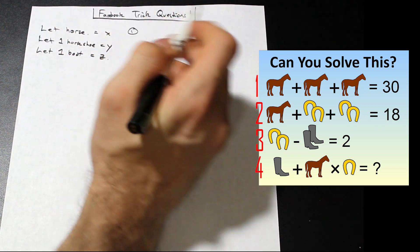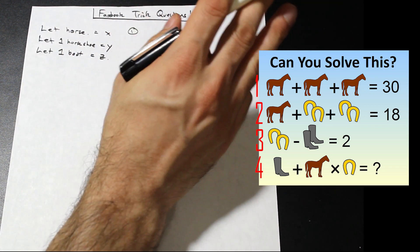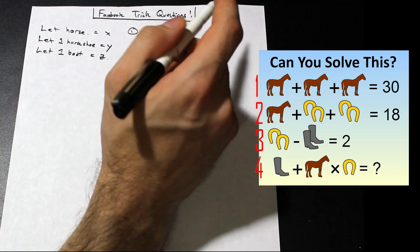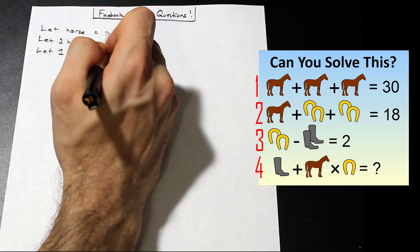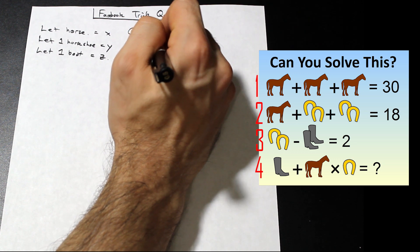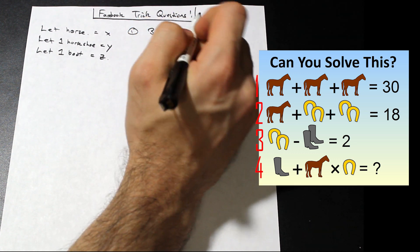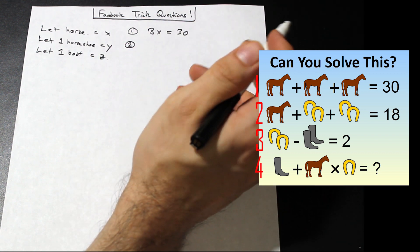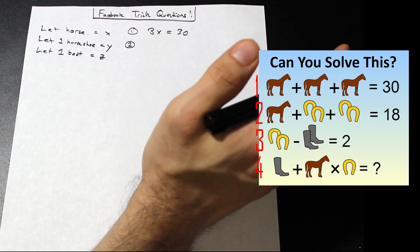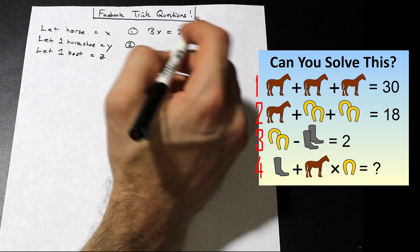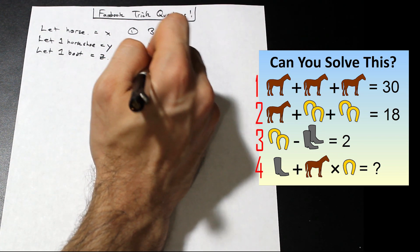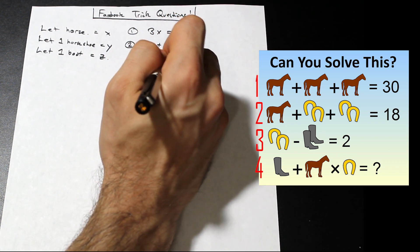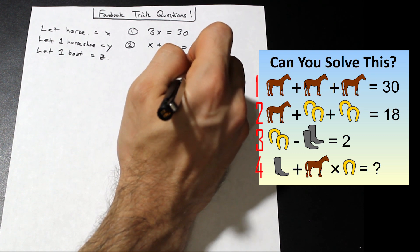Okay, so we've assigned variables to all of our little pictures. Let's go ahead and we'll start to write out equations. So we have three horses equals 30 in the first equation. We let one horse equal X, we have three horses, so that's going to be 3X equals 30. That's our first equation. For our second equation, we have one horse and count how many horseshoes we have. It's two plus two, so we have four horseshoes. So we have one X plus 4Y is equal to 18.